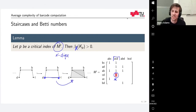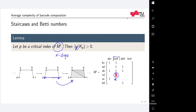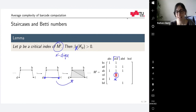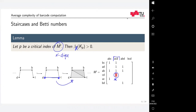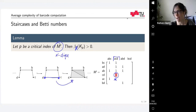Question: is the term 'critical' related to Morse theory? Yes and no — the name 'critical' suggests something homological is changing, but we were not thinking about Morse theory when we noticed this. It's just a name that is reminiscent of Morse critical points.